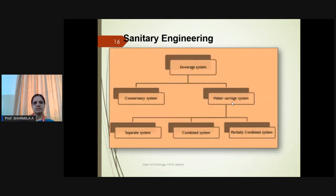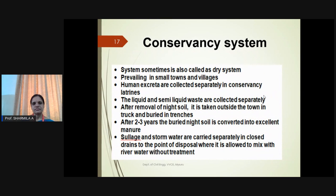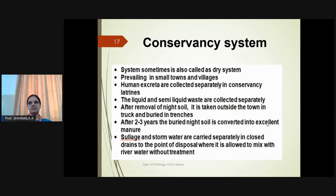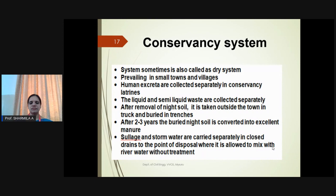The system of collection is categorized into two types: conservancy system and water-carry system. In the conservancy system — also called a dry system — the quantity of water generated is lesser. Human excreta are collected separately, and after removal of night soil, it is taken outside the town and buried in trenches. It is converted into excellent manure after two or three years, and sullage and stormwater are carried separately and can be allowed to nearby water bodies without treatment.